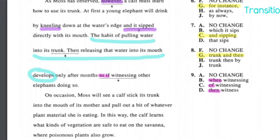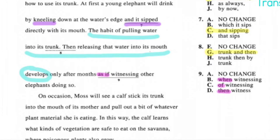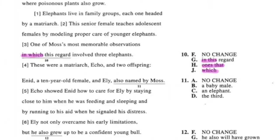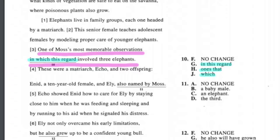Questions nine and ten both deal with prepositional phrases, which help us understand what position something is in relation to something else. Reading the full sentence: 'the habit of pulling water into its trunk and releasing that water into its mouth develops only after months of witnessing other elephants doing so' — 'of witnessing' is the best preposition for question nine. Question ten asks: 'in which,' 'this regard,' 'in this regard,' or 'ones that.' Reading the sentence, 'in this regard' is clearest and most concise — KISS, keep it simple. Right answer is G.